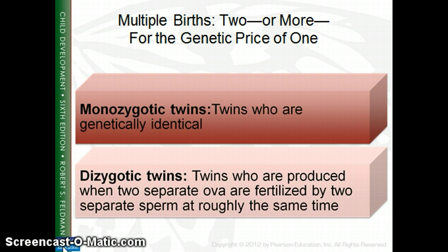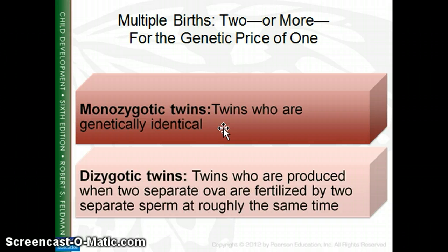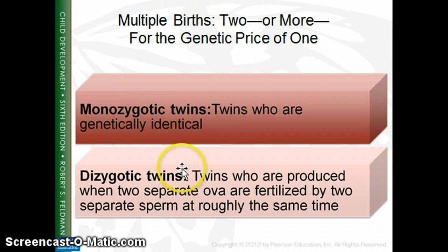One of my favorite topics in this chapter is twins. Monozygotic twins are twins who are genetically identical, so they would both be boys or both be girls. They occur when a fertilized egg splits — one sperm, one egg, and they split. Monozygotic meaning one zygote, one fertilized egg.